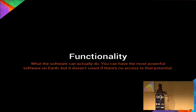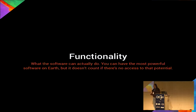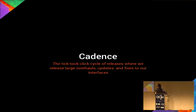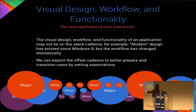Functionality — what our software can actually do. You can have the most powerful software on earth and it doesn't count for anything if users can't access that potential. Cadence is the tick-tock click cycle of releases where we release large overhauls, smaller updates, and fixes to our interfaces. A note about cadence is that visual design, workflow, and functionality all follow different cadences, at least if they're not deliberately synced up.